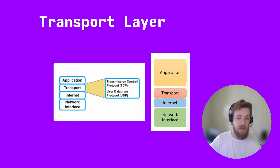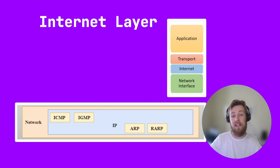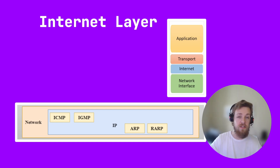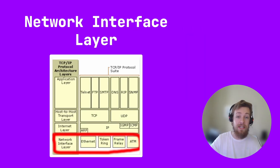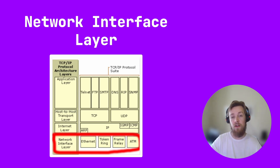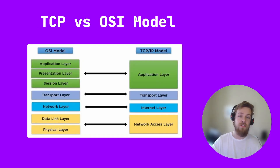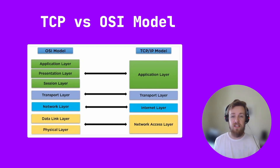Then there's the transport layer, which handles the reliability part of the data — this is where TCP and UDP are used. The internet or network layer is primarily used for routing, so that's sending packets across different networks. This is where IP addresses come in, and also where ICMP and other routing protocols like OSPF happen. The network interface or link layer is the layer that interfaces with the network hardware like Ethernet or WiFi. Data always flows from the top to the bottom of the system doing the sending, and from the bottom to the top of the system receiving the data.